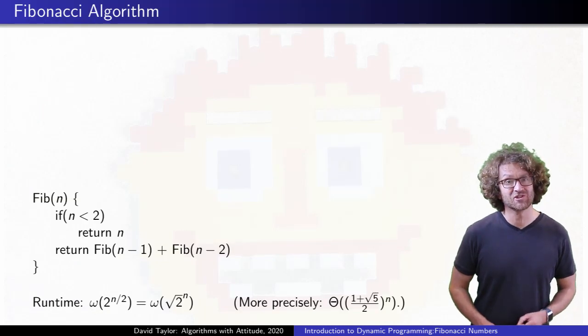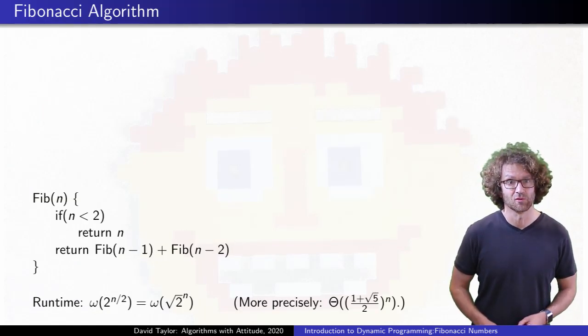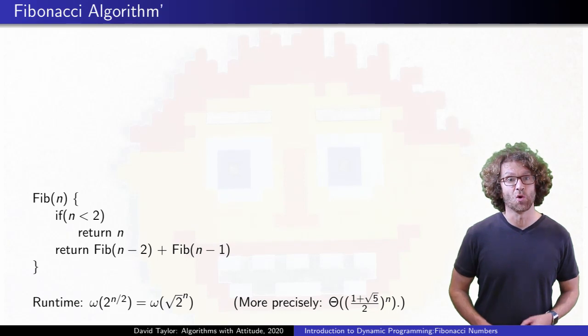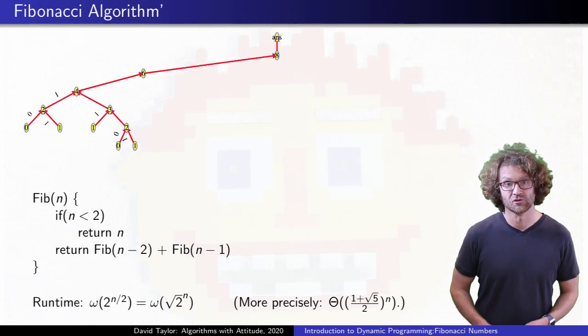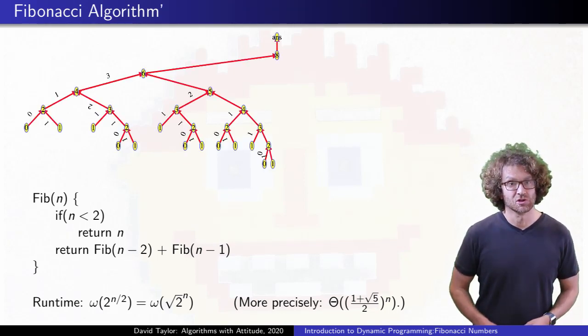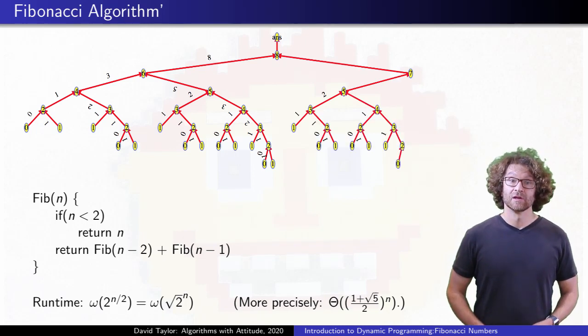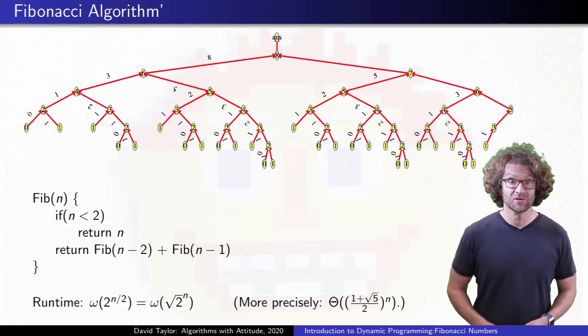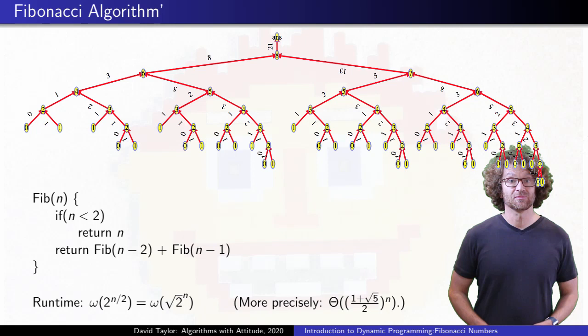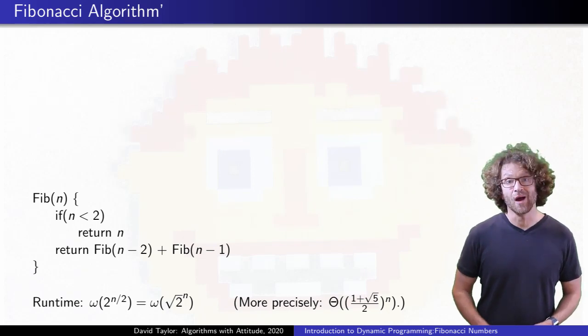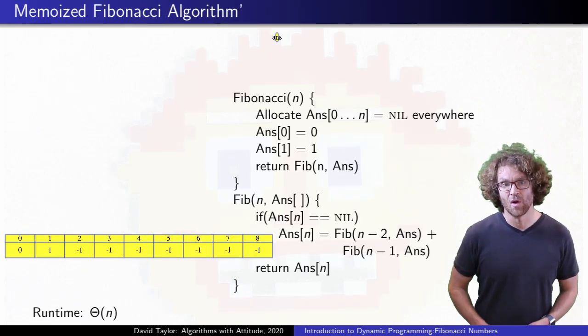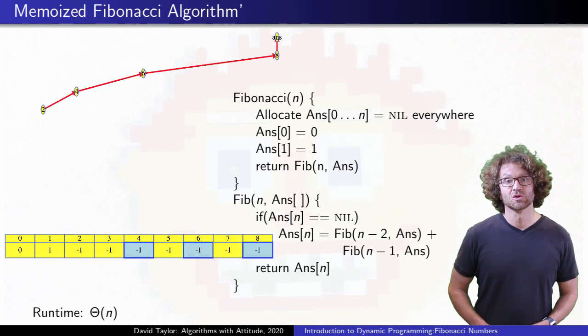It's worth looking at a very slightly different version of the program, with just a switch in the order of our recursive calls. What happens to the recursion tree? Well, for the unmemoized version, it looks the same as before, except the long spine is on the right. But for the memoized version, the tree will look different.